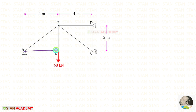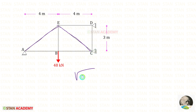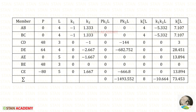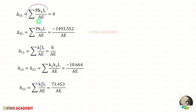Now we find the lengths of the members. Length of AB, BC, and ED is 4. Length of BE and CD is 3. To find the length of AE and CE we use Pythagoras' theorem: root of (3² + 4²) = 5 meters. Enter all the lengths into the table. Then we calculate PK1·L, PK2·L, K1²·L, K1·K2·L, and K2²·L and their summations.